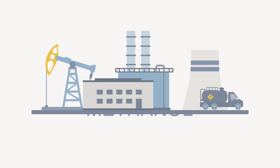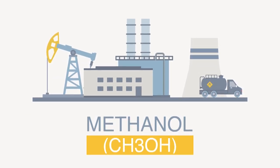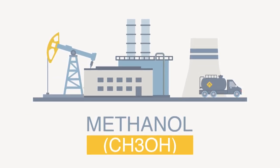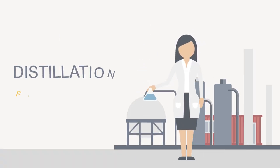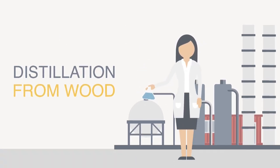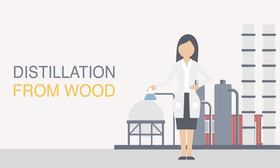Methanol, or methyl alcohol, is a colorless, poisonous, flammable liquid and the simplest of the alcohols. Originally made by distillation from wood, it is now mainly produced from oxidation of methane.